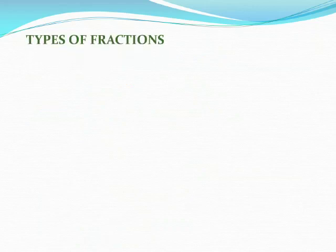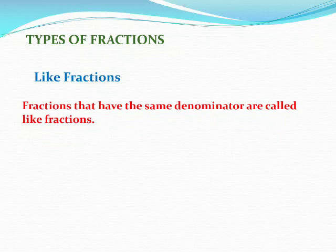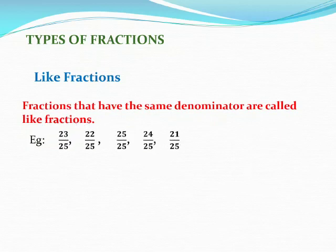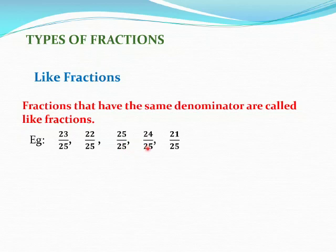Now let us see the types of fractions. First, like fractions. What are like fractions? Fractions that have the same denominator are called like fractions. For example, suppose these are the PA1 marks of 5 main subjects. You know that the total marks of each subject is 25. Suppose you got 23 marks in EBS, written as 23 by 25. Like that in other subjects, scores are 22 by 25, 25 by 25, 24 by 25, 21 by 25. Here all these fractions have the same denominator, so they are like fractions.